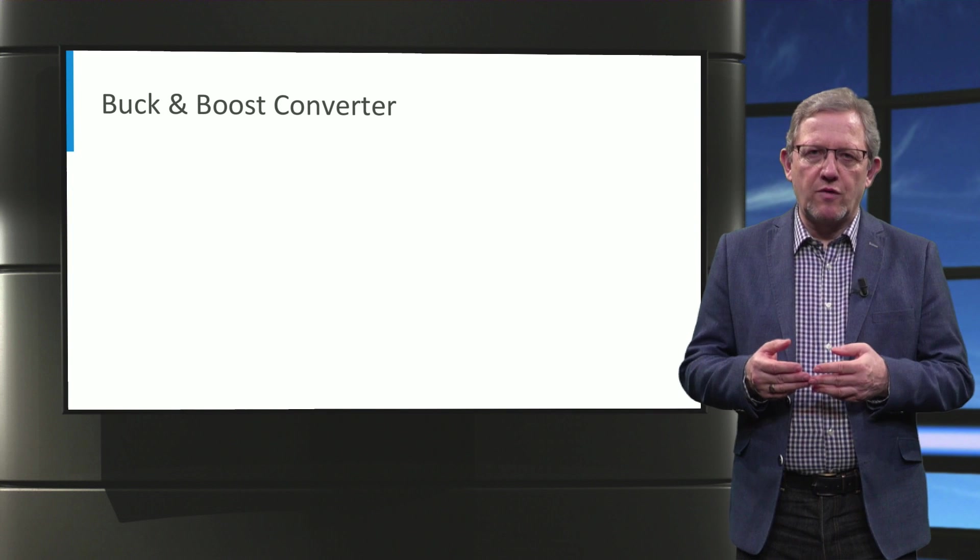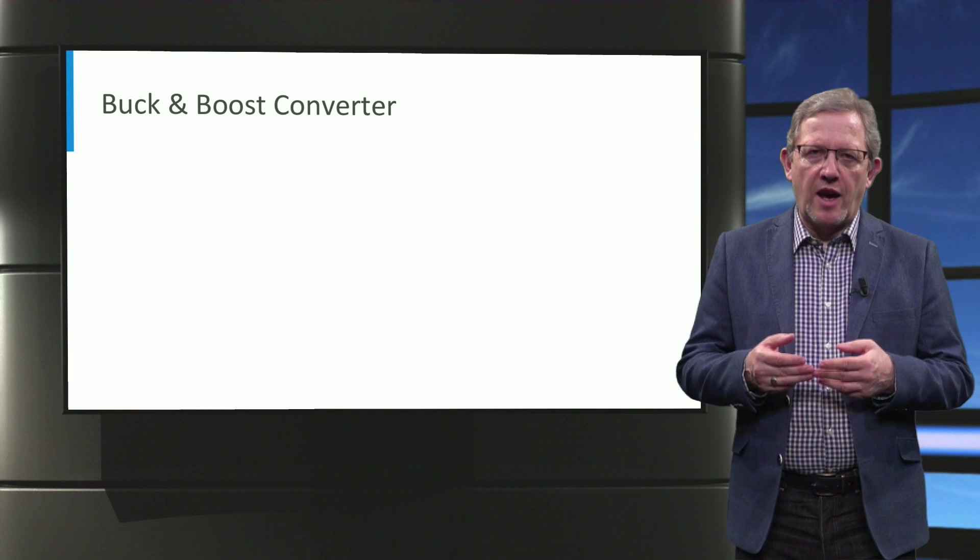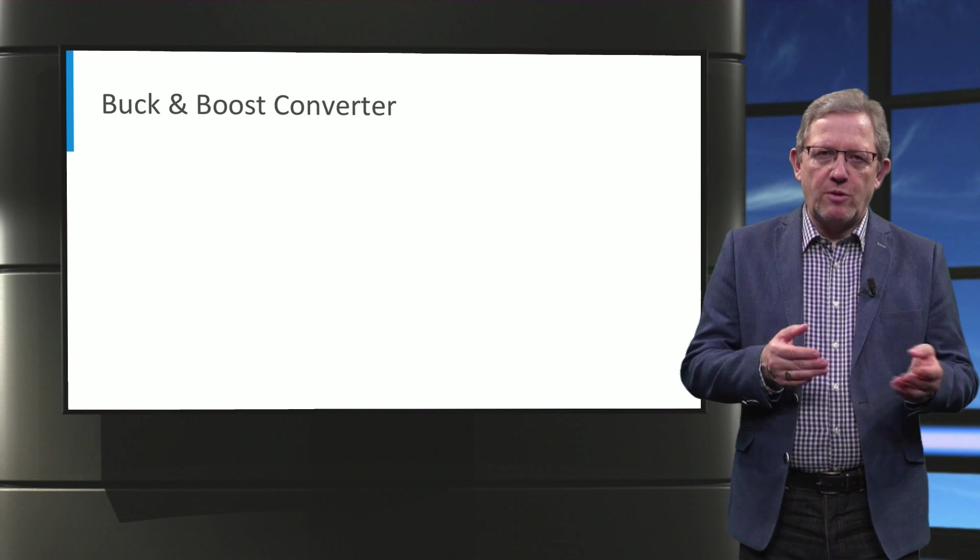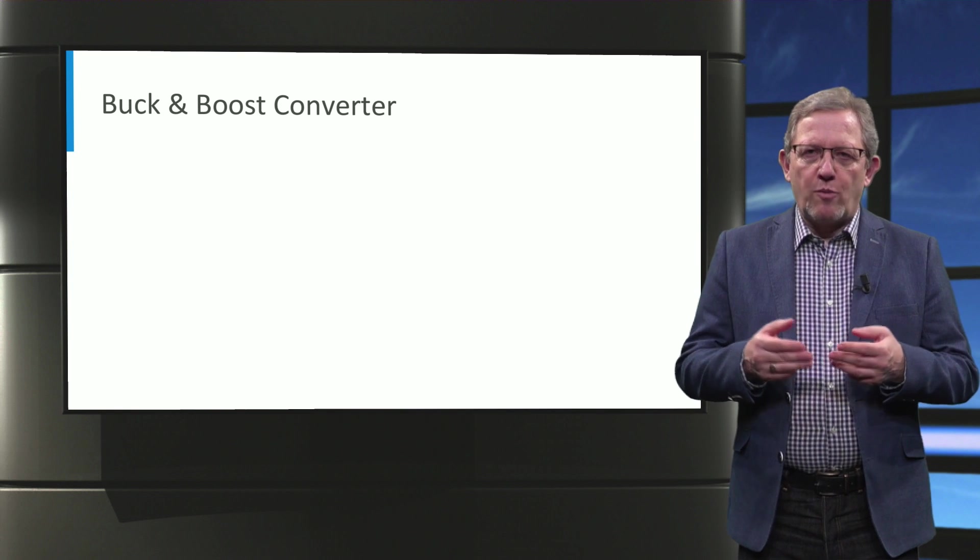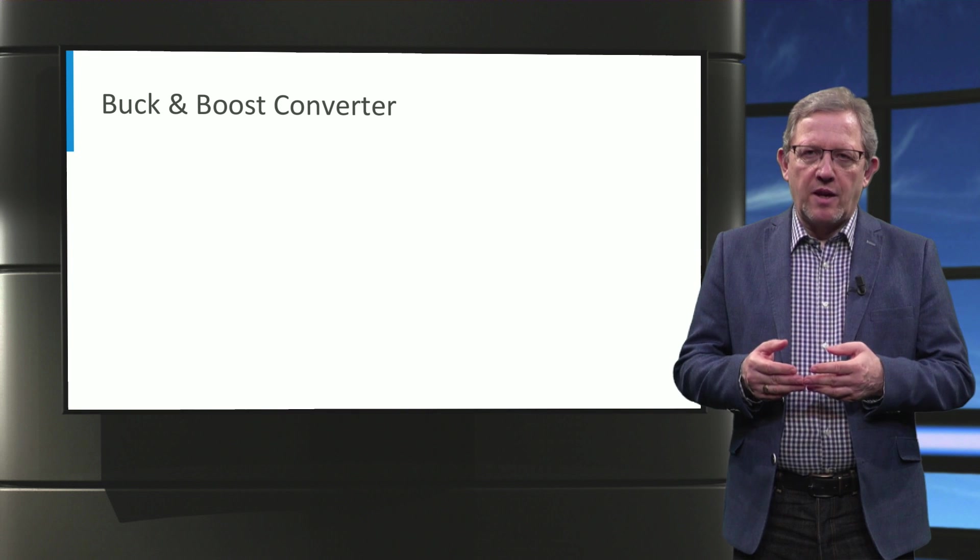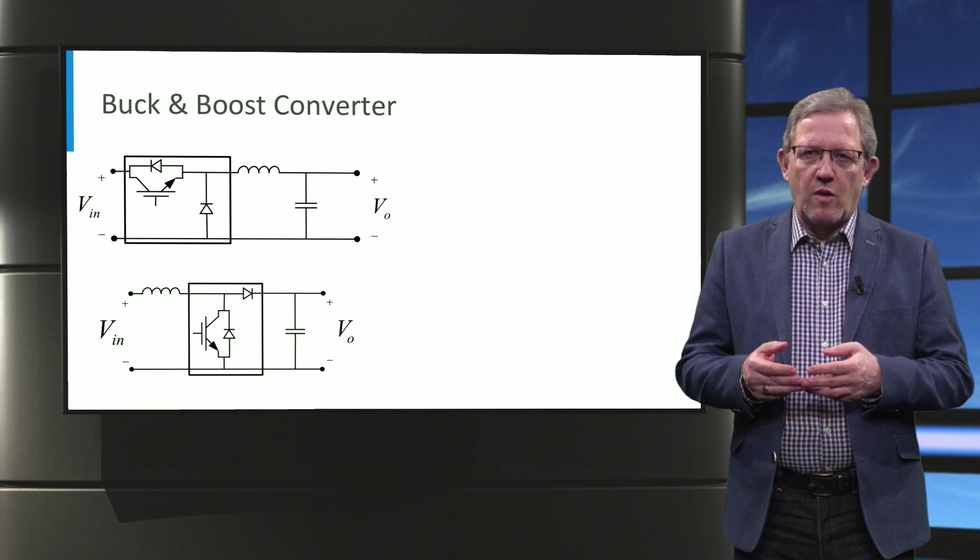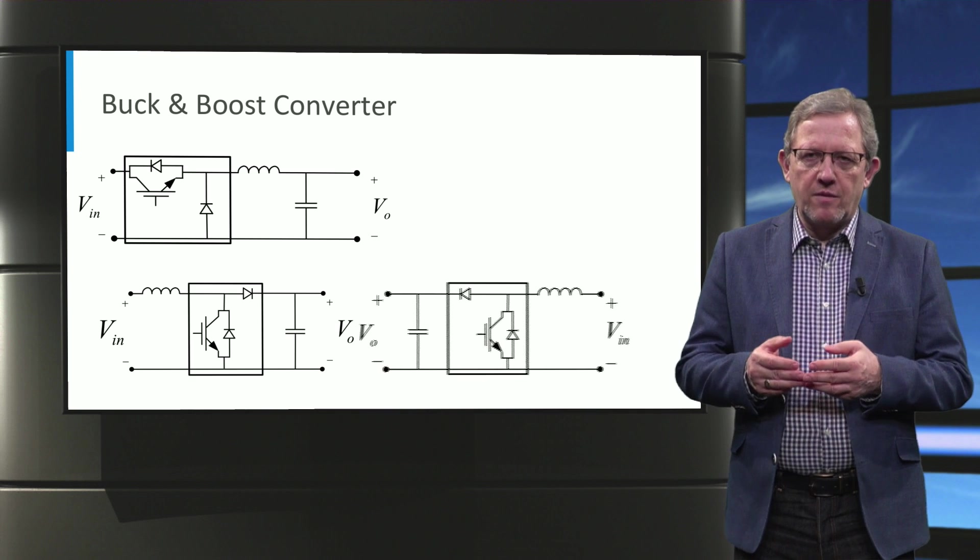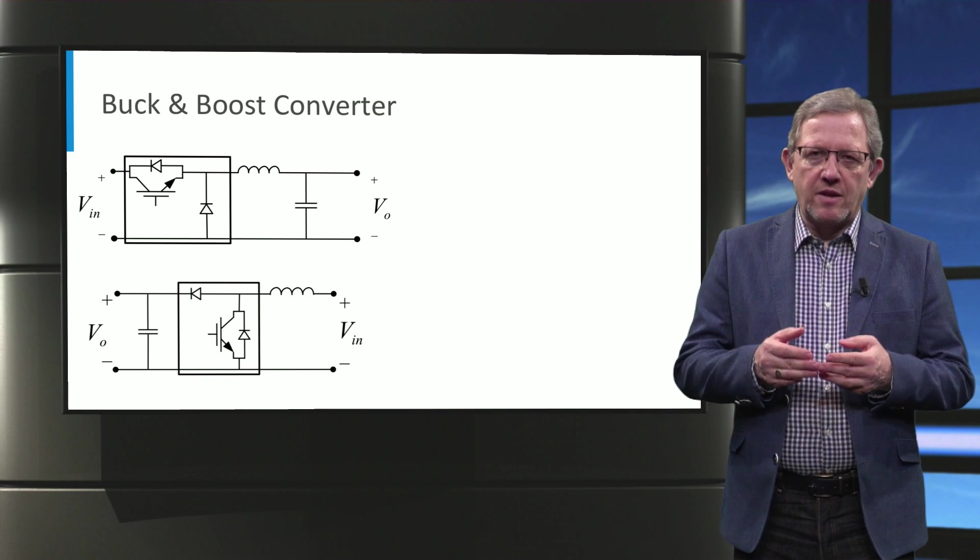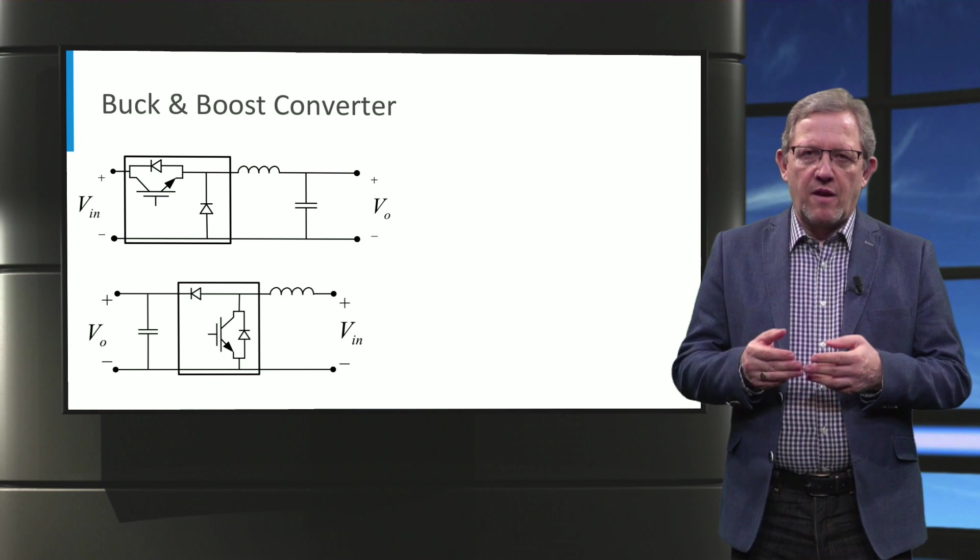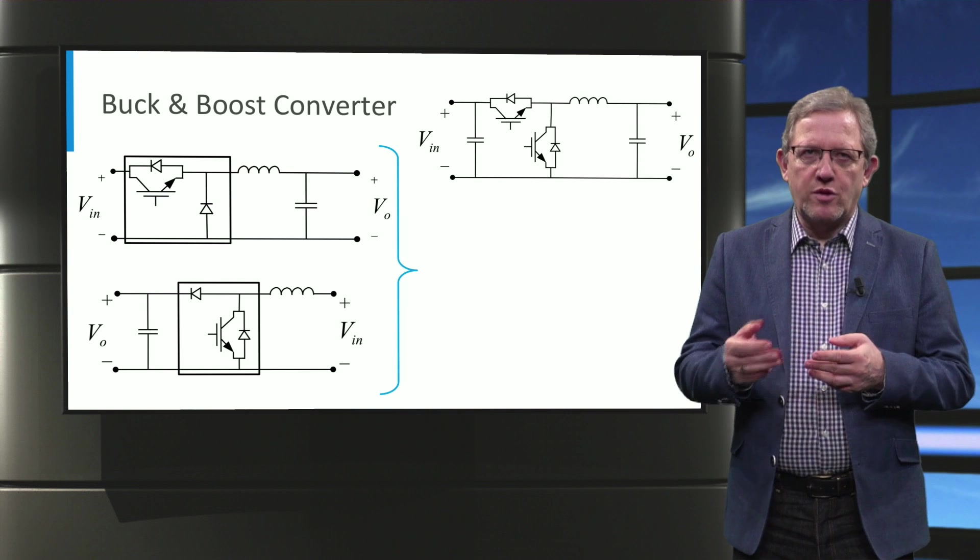How can we make a DC-to-DC converter topology which would be able to step up and step down the voltage? We can combine the previous two topologies, namely the buck converter and the boost converter. When we flip the boost converter and combine these two converters, we create the buck and boost topology.